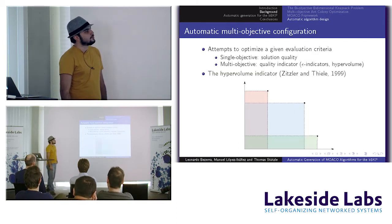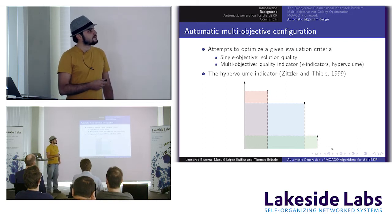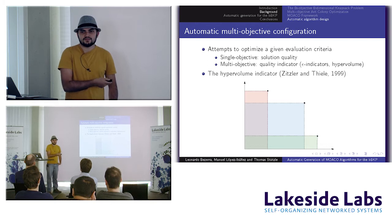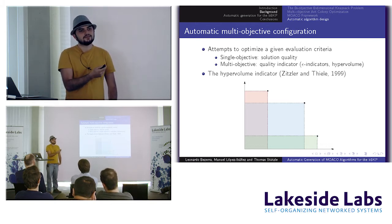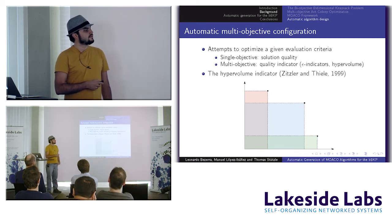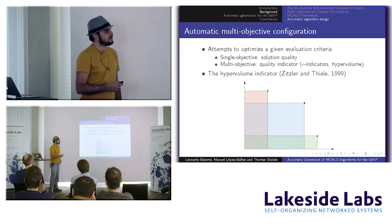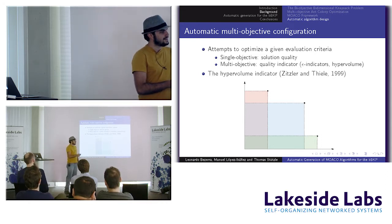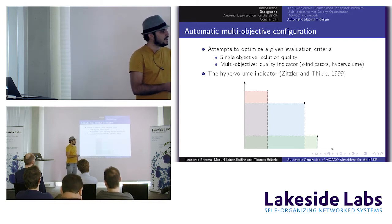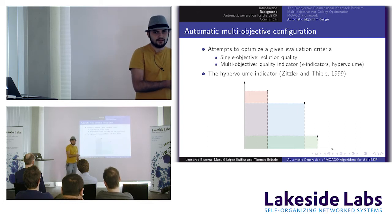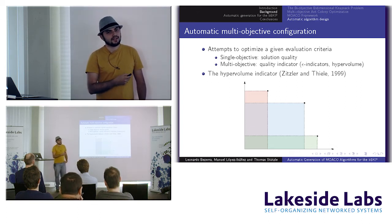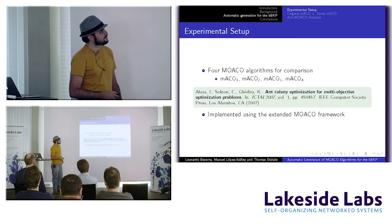To evaluate configurations in multi-objective optimization, we use quality indicators. Specifically, we use the hypervolume: each non-dominated solution dominates a subspace in the objective space, and the hypervolume is the union of those areas. The larger the hypervolume, the better the quality of the configuration. This is how we test and compare different designs of our MOACO algorithms.